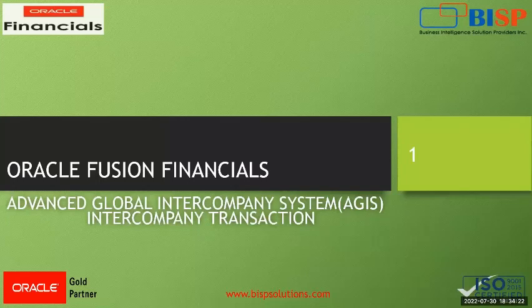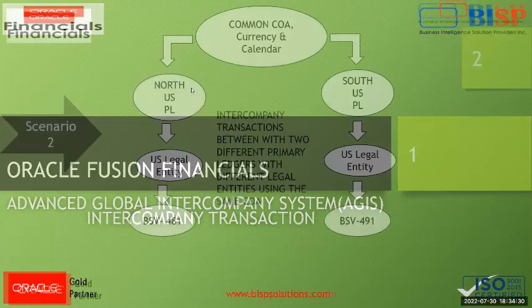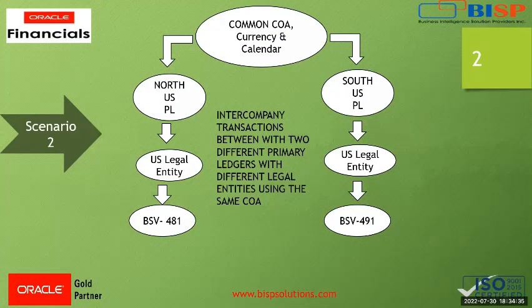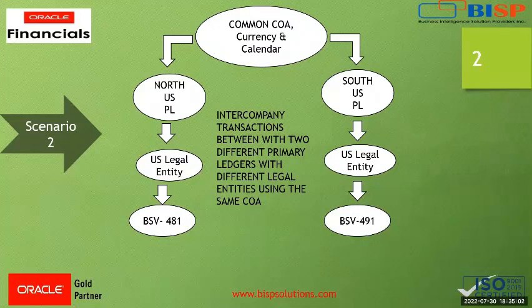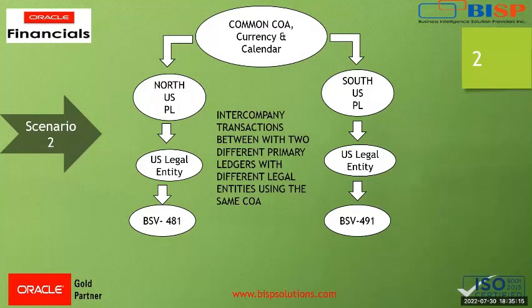Hello everyone, my name is Suman Shah and today we will discuss intercompany transactions in EGIS. We will discuss a scenario in which there are two primary ledgers sharing a common chart of accounts and currency, with two different legal entities having balancing segment values of 481 and 491. We will make a transaction between the two different primary ledgers and see how balances get eliminated by grouping the ledgers — that is, the North US primary ledger and the South US primary ledger.